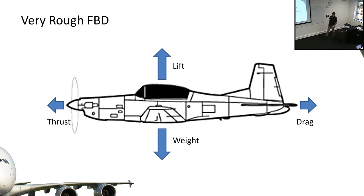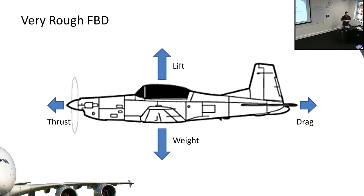Straight level flight is something you'll hear a lot over the next couple of years. It's the go-to condition we put an aircraft in when thinking about performance and structures, because from straight level flight we can impose other conditions as we see fit. This is the default state a cruising aircraft lives in. This is obviously a very rough FBD - I've really treated the aircraft as a particle here.